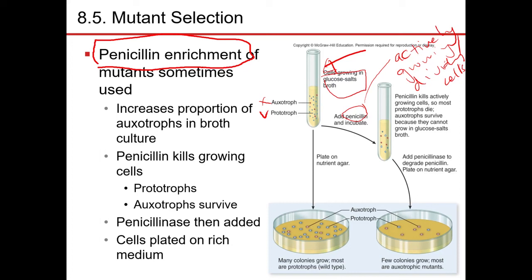Once you add penicillin and incubate the tubes, penicillin will start targeting the prototrophs and killing the prototrophs. Penicillin will not harm the auxotrophs — it only kills the prototrophs.